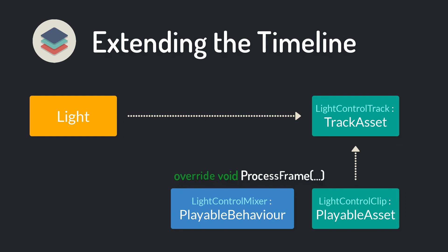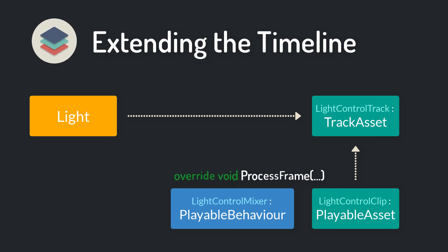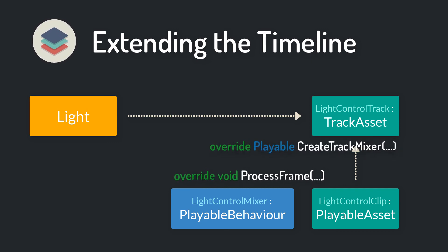To generate mixer playables when the timeline is played during runtime or in preview mode, you need to overwrite the CreateTrackMixer method within your track script.